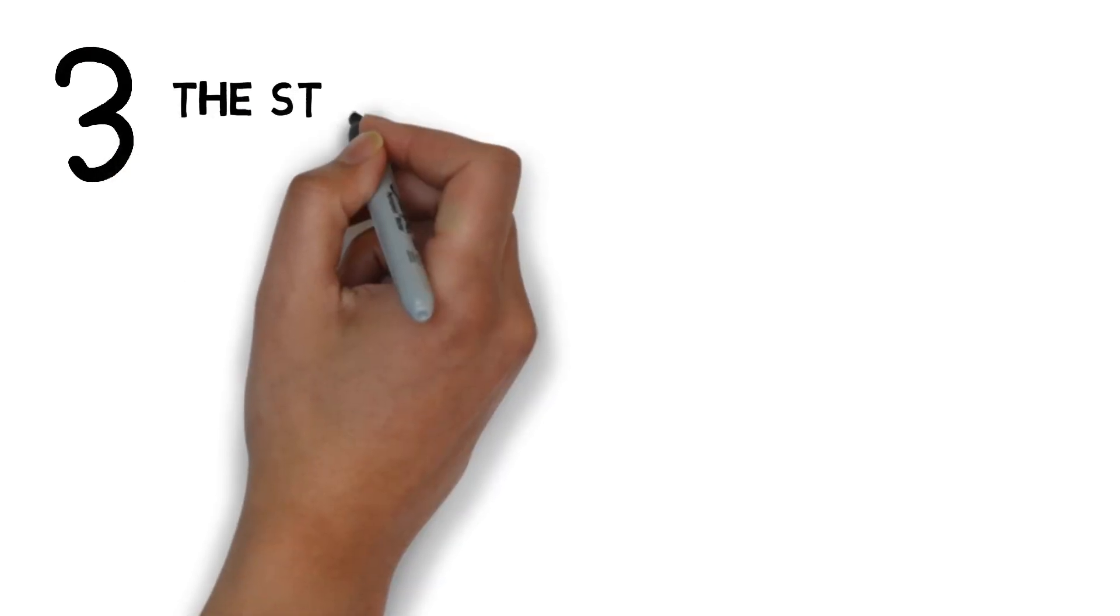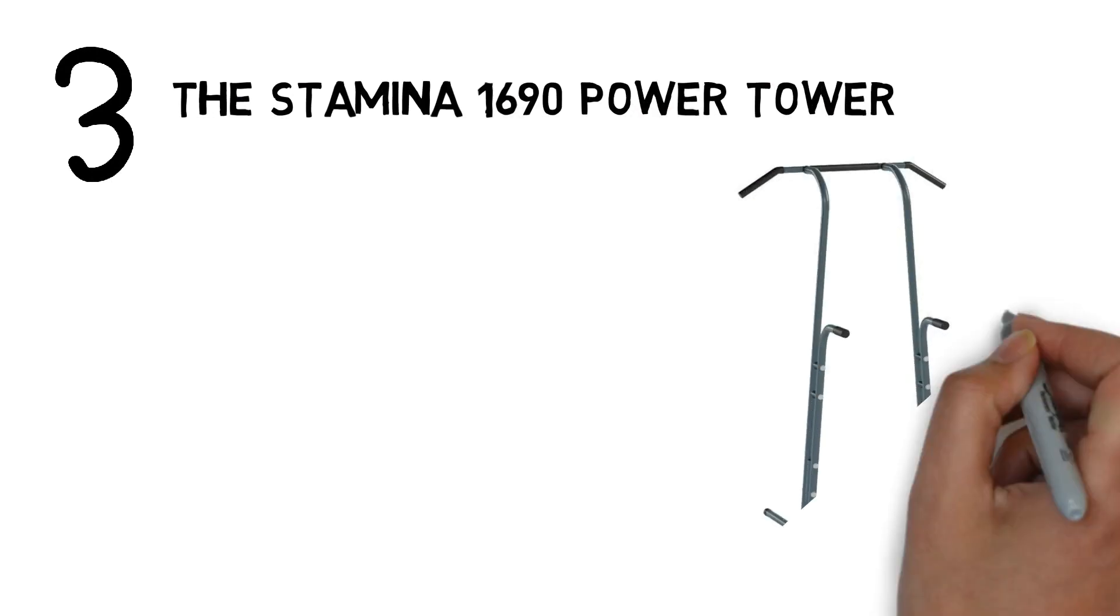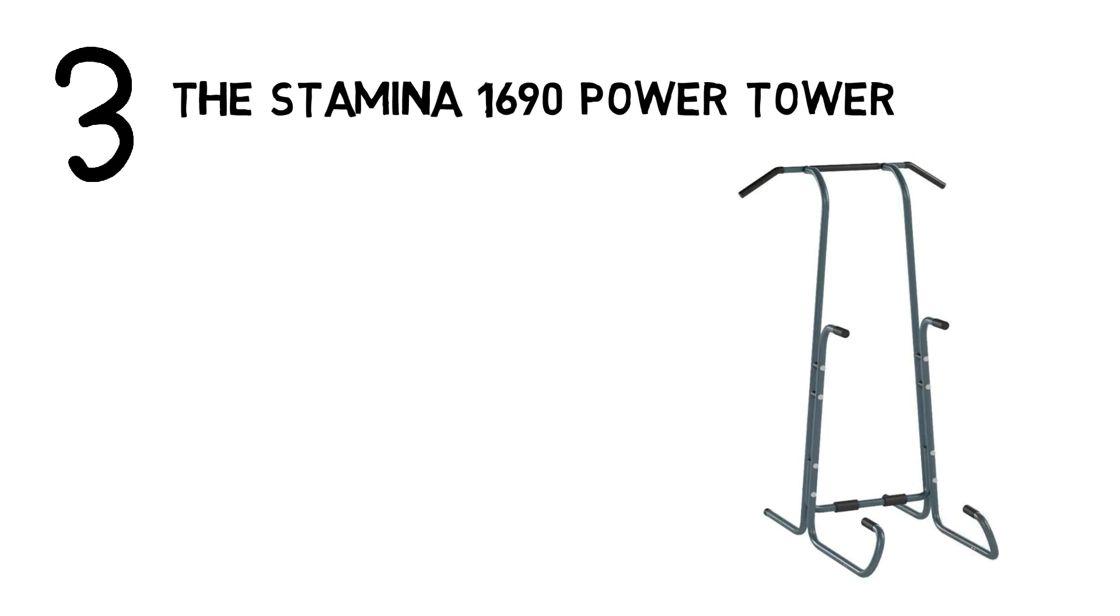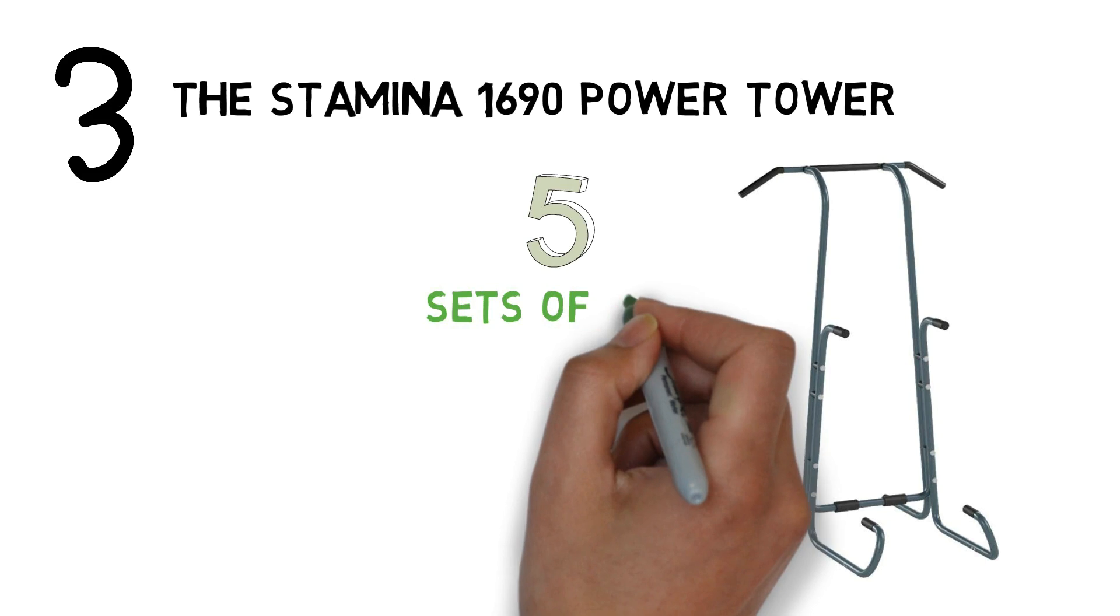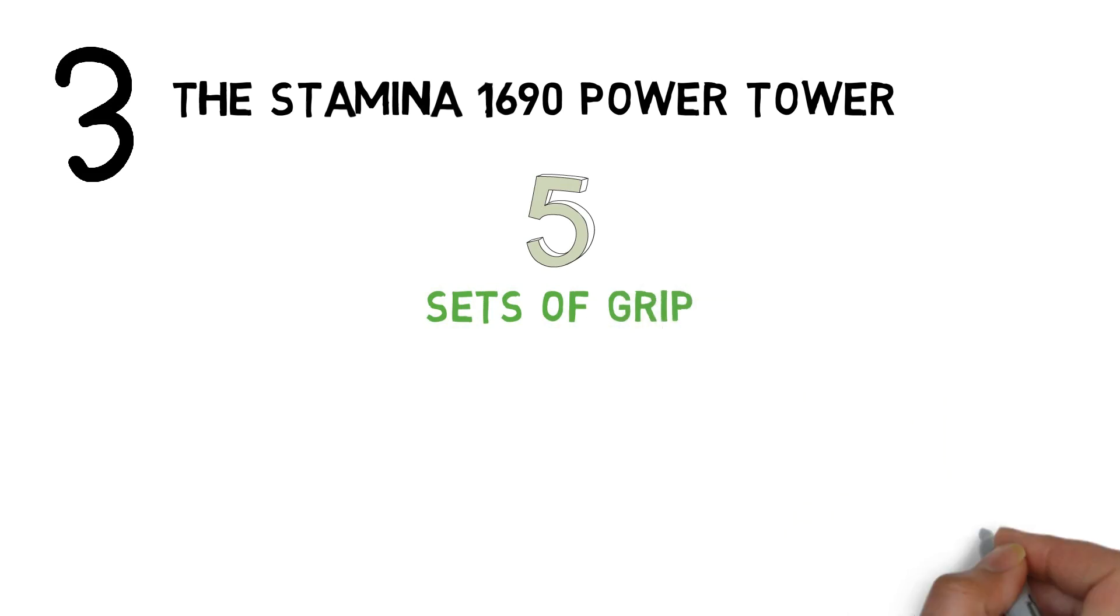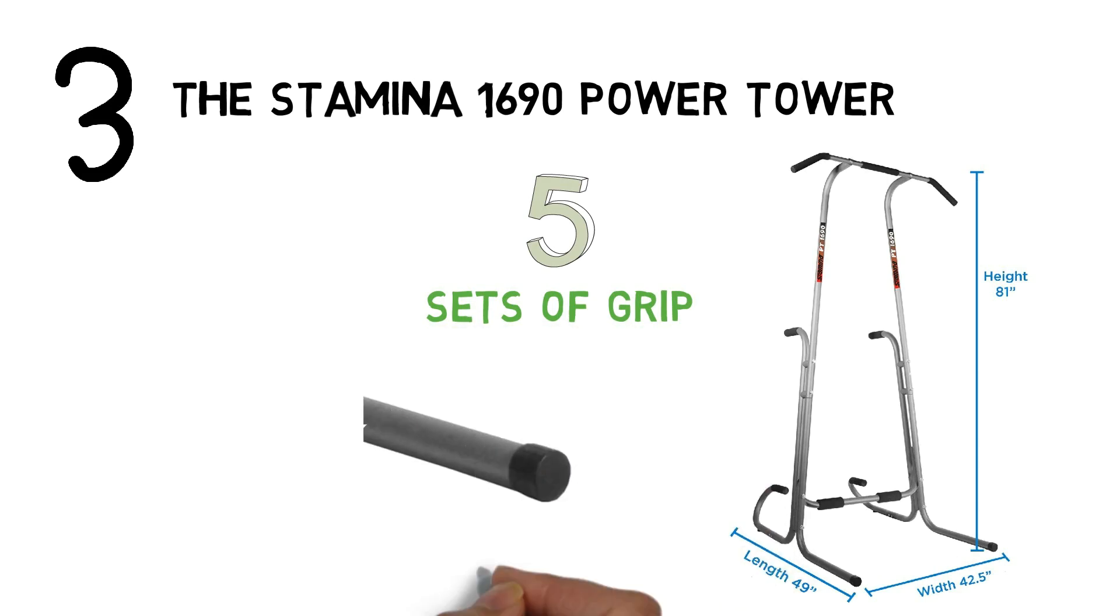At number 3 we have the Stamina 1690 Power Tower. The Stamina 1690 Power Tower is a free-standing full-body workout unit made of durable steel and fitted with padded foam in five sets of grip locations. The overall size of this assembled tower is 49 inches long by 42.5 inches wide by 81 inches high. The base of the tower features no-slip end caps.